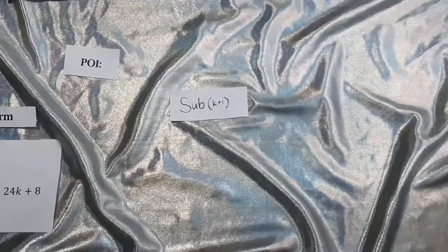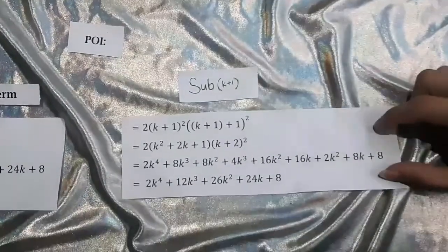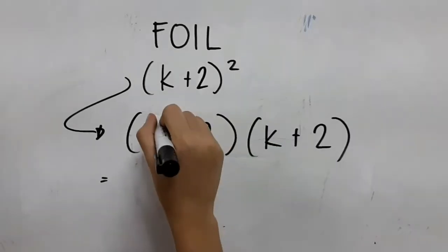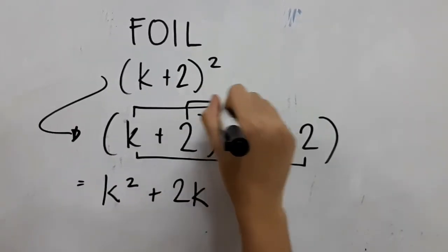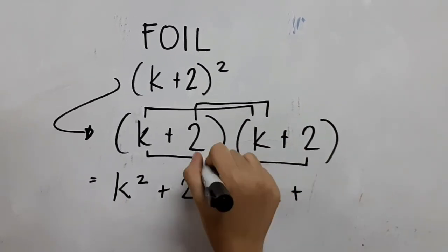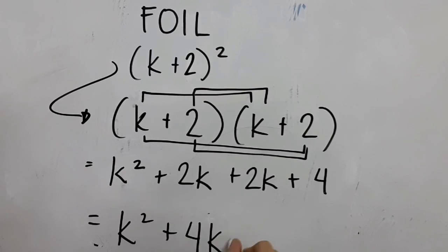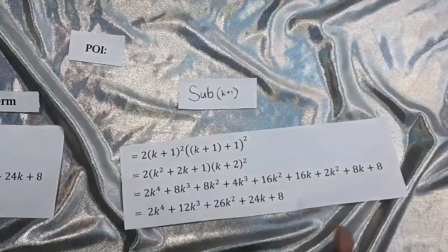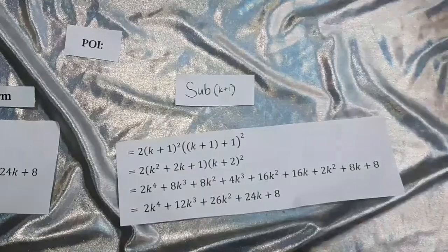For the next process, we should substitute all the k terms by k plus 1. You will now derive this, where all the k here is substituted to k plus 1. We should expand this using the binomial theorem, deriving 2k³ + 8k³ + 8k² + 4k³ + 16k² + 16k + 2k² + 8k + 8. We can simplify this by adding the like terms.